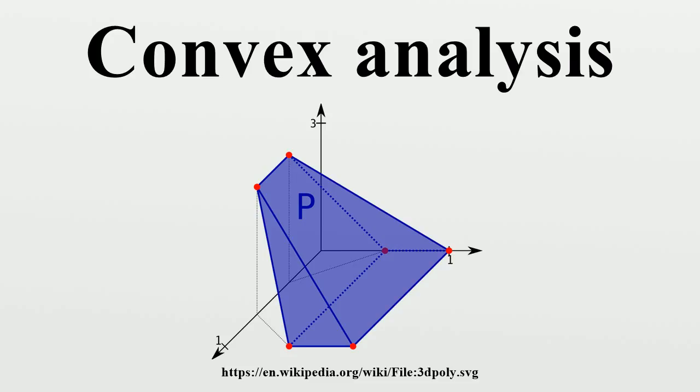Bi-conjugate: The bi-conjugate of a function f: X→R∪{±∞} is the conjugate of the conjugate, typically written as f**: X*→X→R∪{±∞}.